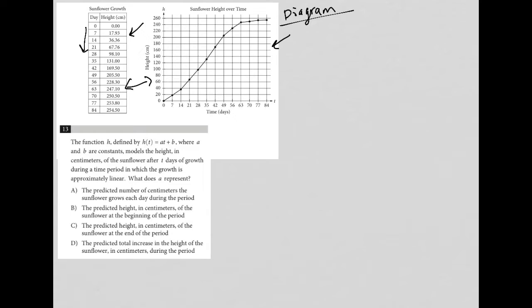So question 13 says the function h defined by h(t) = at + b. I just make a habit to always write equations down when they're given. So h(t) = at + b, where a and b are constants, models the height in centimeters of the sunflower after t days of growth during a time period in which the growth is approximately linear.